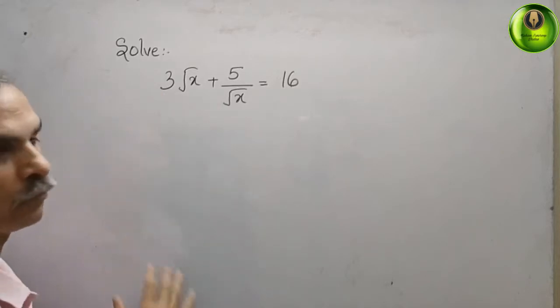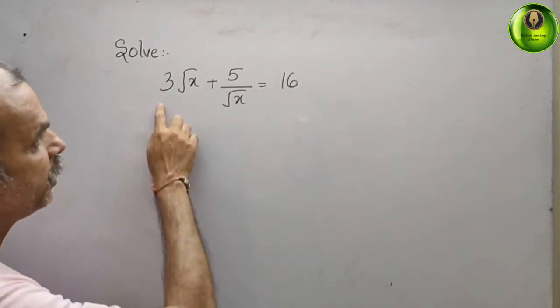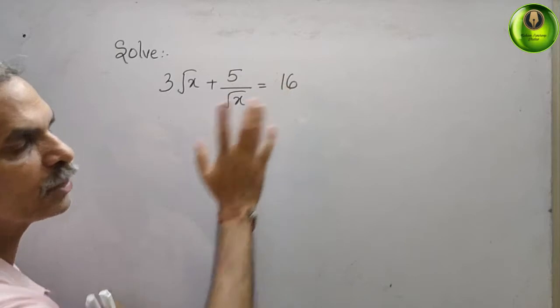Your question is, solve what they have given: 3 root x plus 5 by root x is equal to 16.